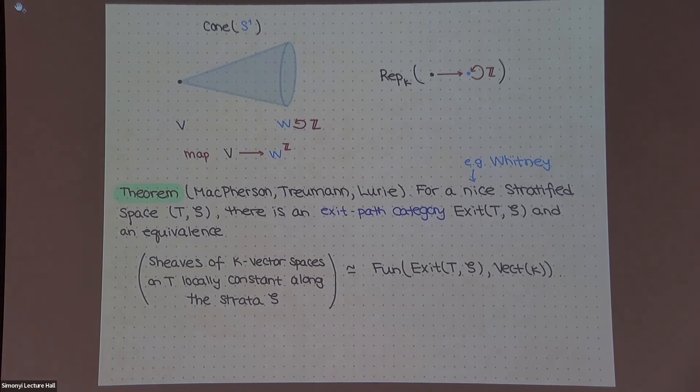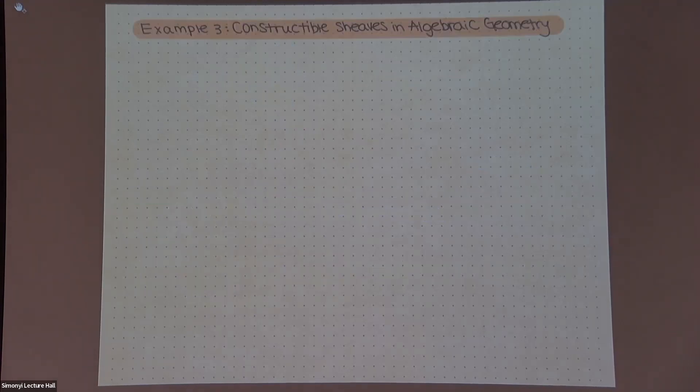Okay, so this was a story that has been known maybe for a while. And one thing that I wanted to understand with my collaborators was how to make this not locally constant version work in algebraic geometry, where things are in certain ways harder and in certain ways easier. So I want to describe one more example to do that, and then I'll kind of state a theorem and maybe some open questions.